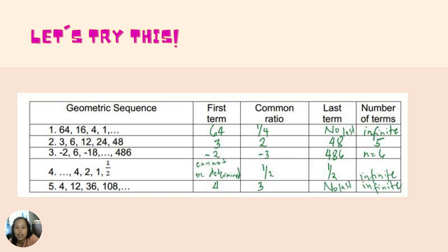For number two, the first term is three and the common ratio is two, with a last term of forty-eight. Counting the terms: one, two, three, four, five — so there are five terms. For number three, the first term is negative two, the last term is four hundred eighty-six, and the common ratio is negative three. Using the formula for finding the nth term of a geometric sequence, n is equal to six — so there are six terms.